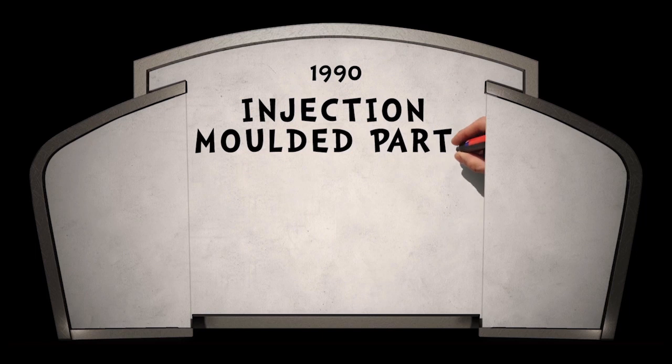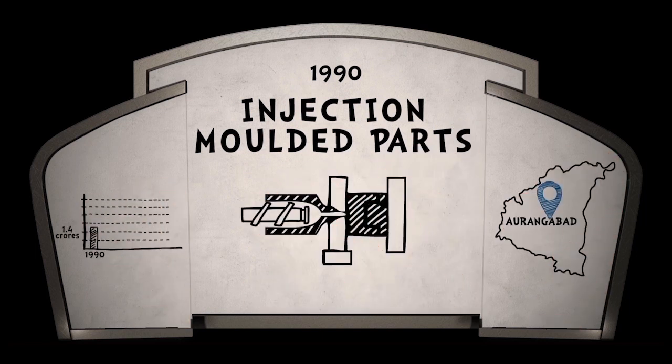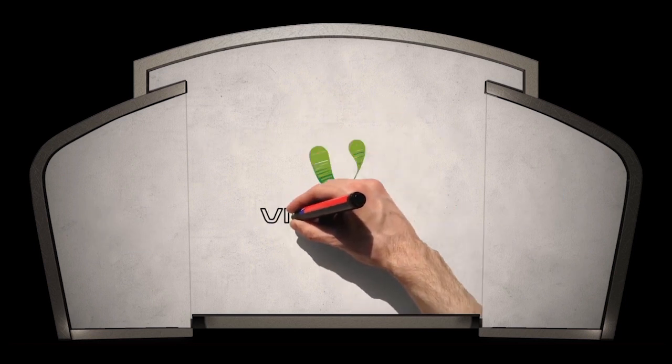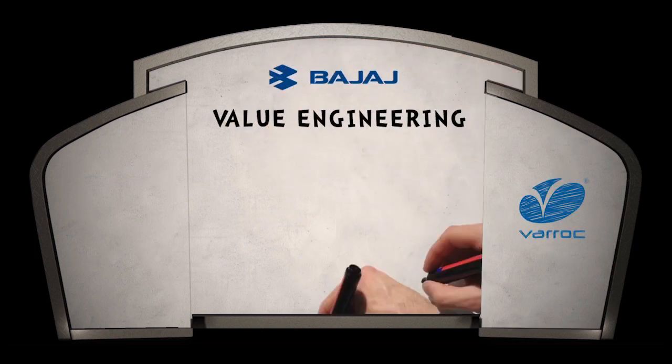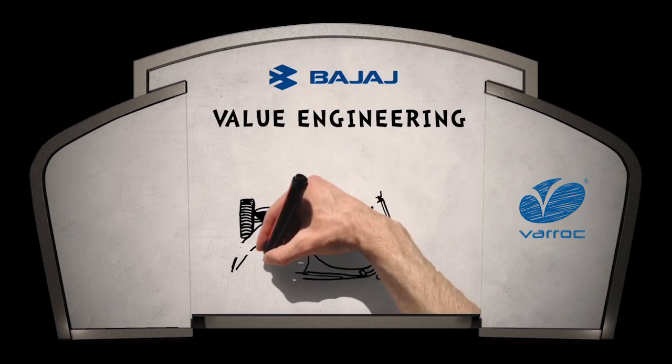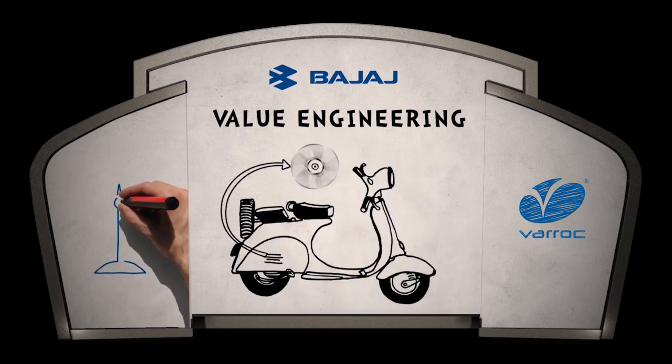Varok commenced business in 1990 in Aurangabad by supplying injection molded parts first to Videocon, a giant in the consumer electronics industry, and later with a value engineering proposal to Bajaj Auto to replace the aluminum fan and fan covers in scooters with molded plastic.